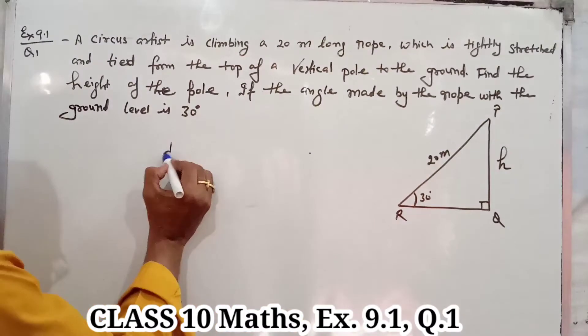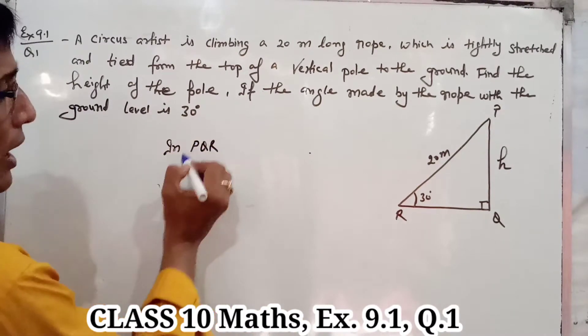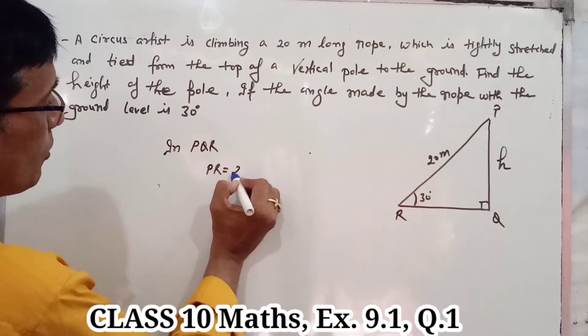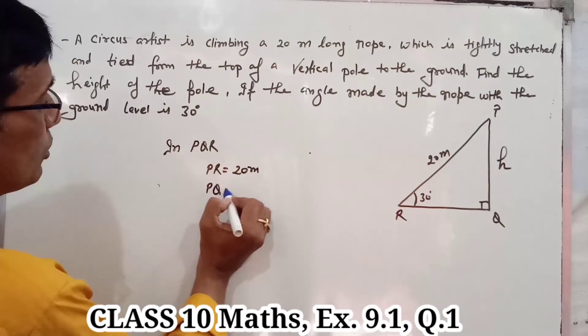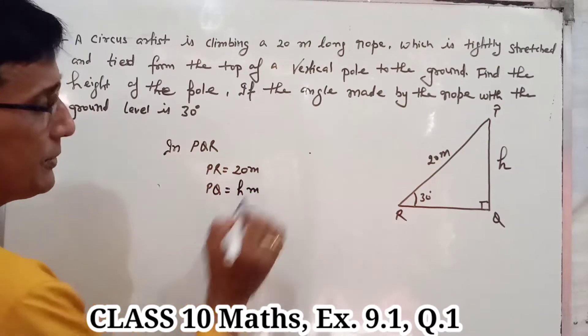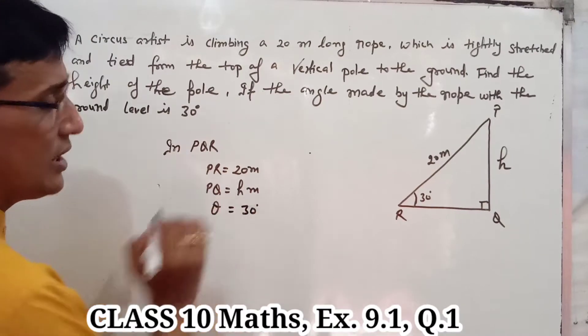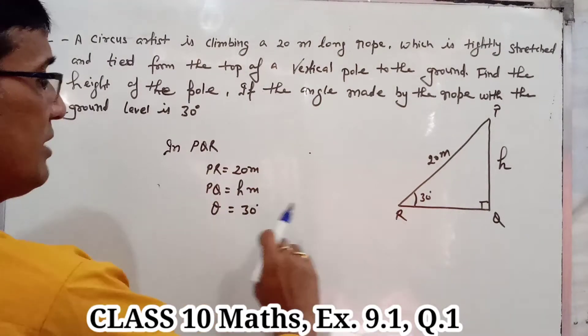Here you can write in triangle PQR, PR is equal to 20 meters and PQ is equal to h meters and theta is equal to 30 degrees.